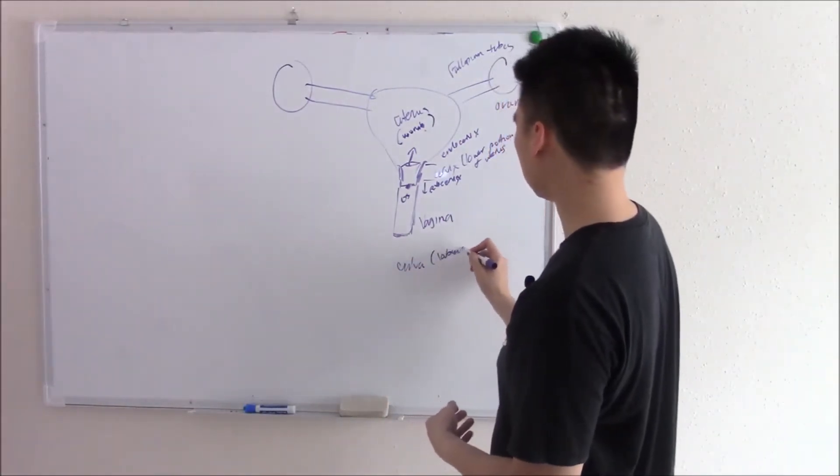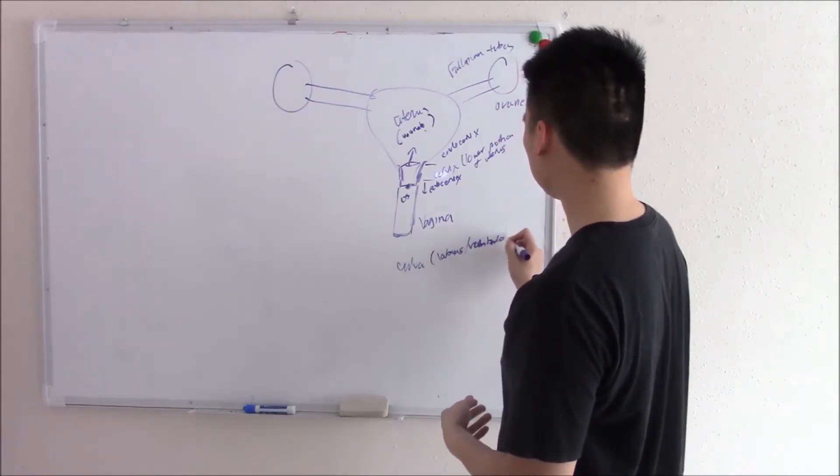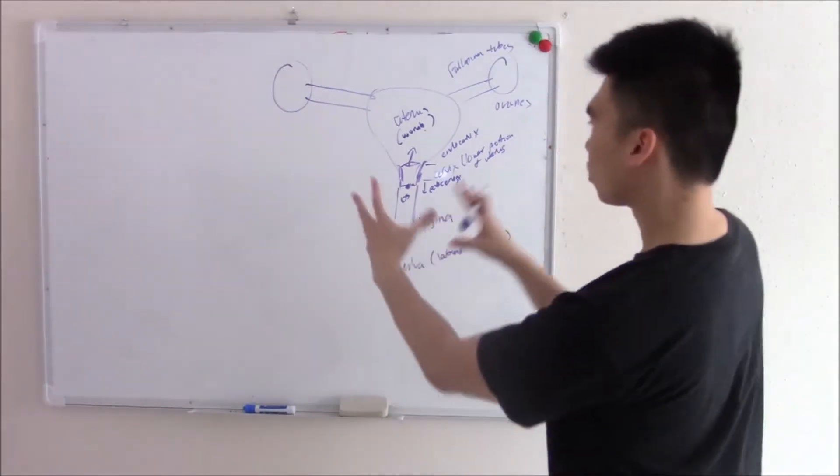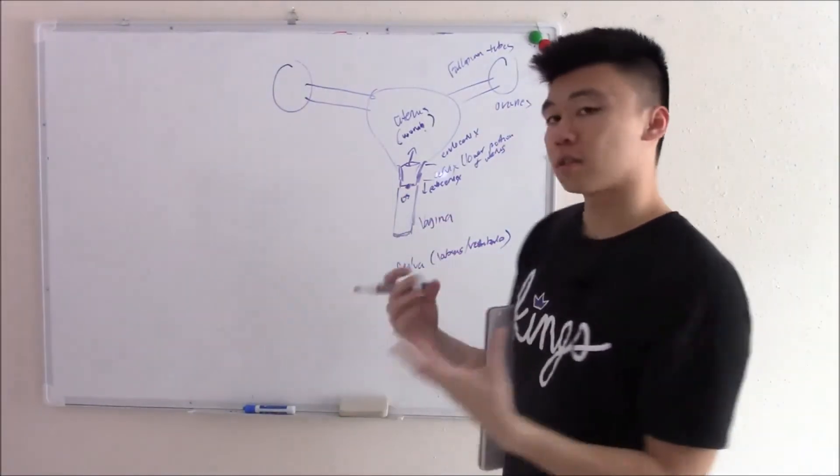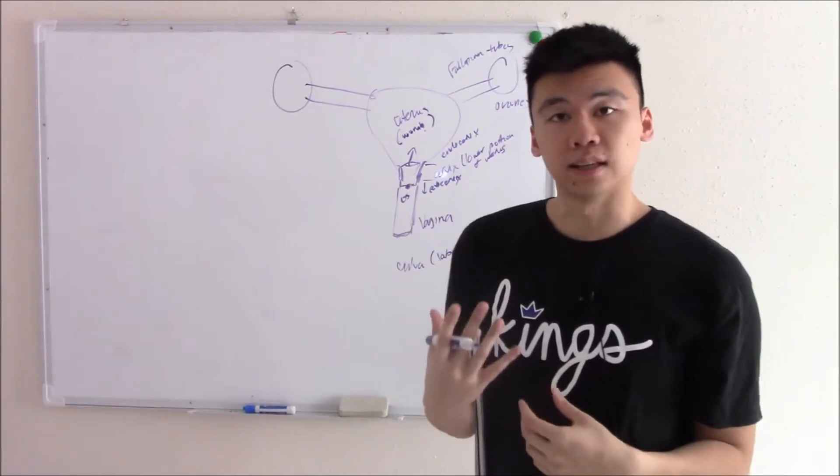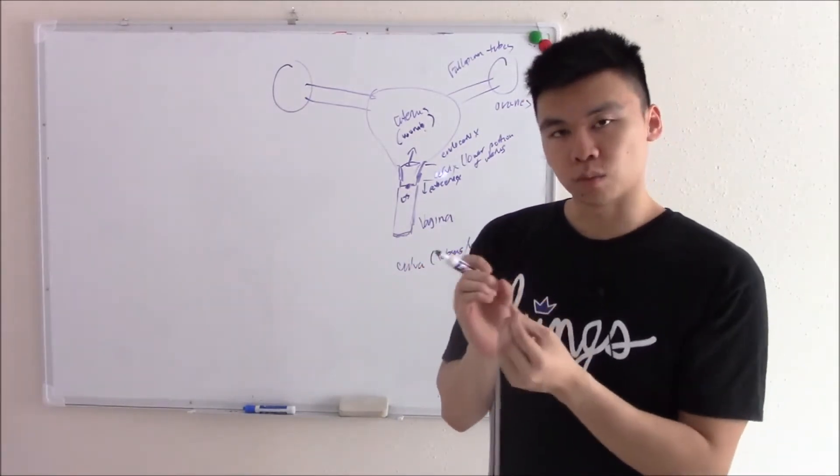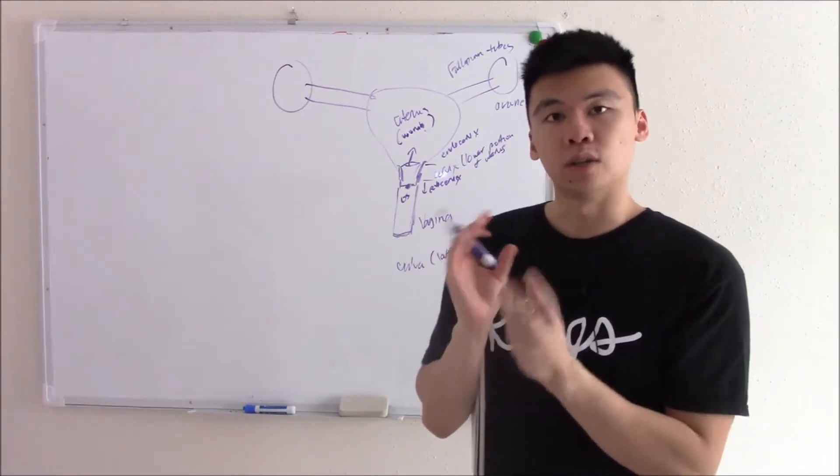So that'd be your vulva and includes your labias and your vestibule. That is the female reproductive system. That's what it looks like grossly. You should also know histologically what the epithelium is. We'll talk about that because we want to see what it is normally and if there's change, we know something's wrong.